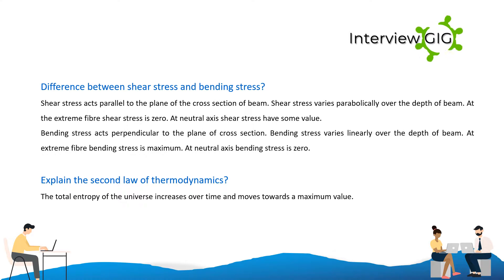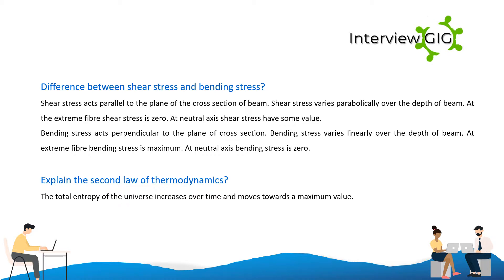Difference between shear stress and bending stress. Shear stress acts parallel to the plane of the cross section of a beam and varies parabolically over the depth of the beam; at the extreme fiber shear stress is zero, while at the neutral axis shear stress has some value. Bending stress acts perpendicular to the plane of cross section and varies linearly; at the extreme fiber bending stress is maximum, while at the neutral axis bending stress is zero.